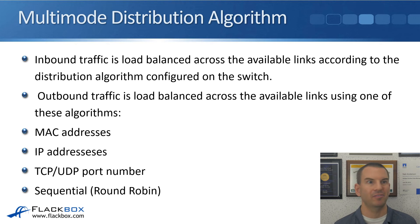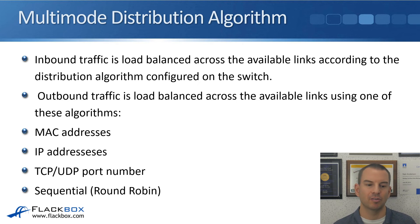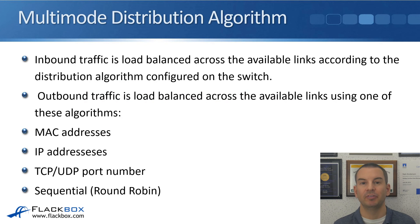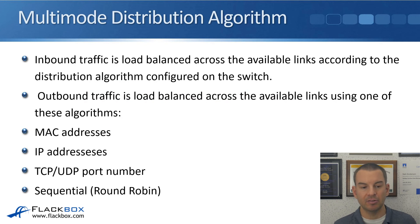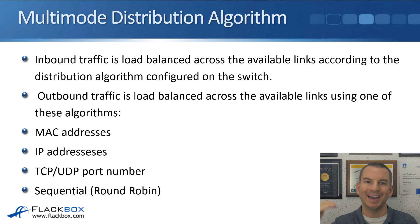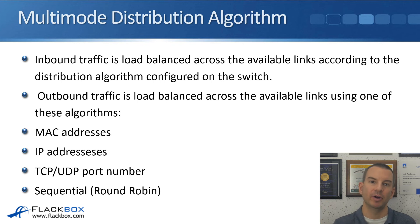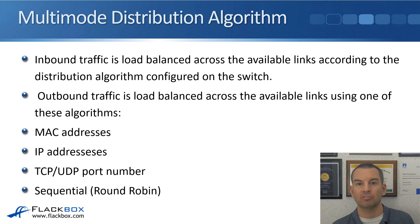You don't want all traffic load balanced to just one of four uplinks — aim for as even a spread as possible. Also worth noting: the load balancing distribution algorithm affects outbound traffic going out from the NetApp system. Inbound traffic is affected by the load balancing algorithm set on the switch. You need a matching configuration on both sides — the switch controls traffic going out to ONTAP, and ONTAP controls traffic going out to the switch.